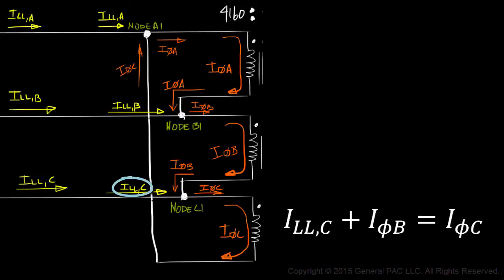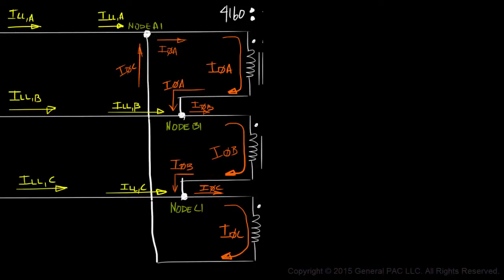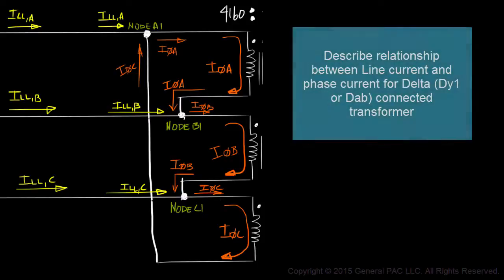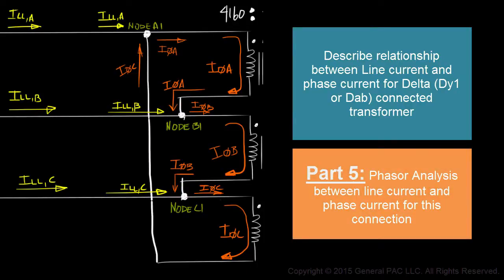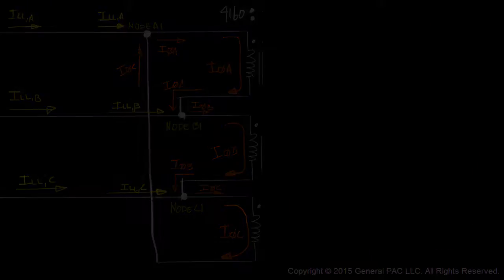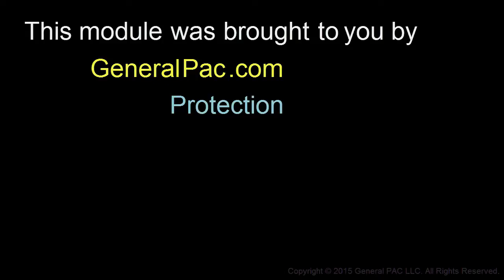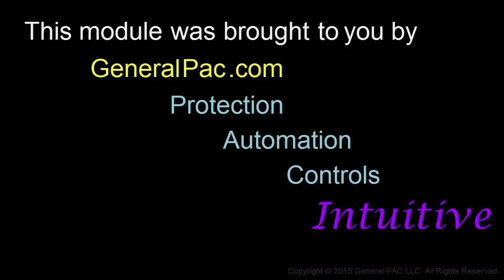And that is how we describe the relationship between Line Currents and Phase Currents for the Delta Transformer Connection. We'll continue this relationship and perform Phasor Analysis in Part 5. This module was brought to you by GeneralPAK.com — making power system protection, automation, and controls intuitive.